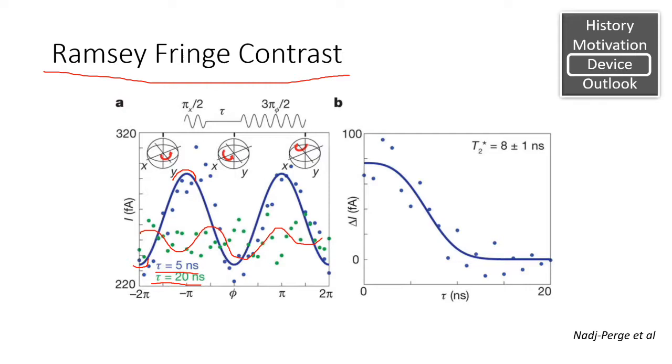So we take the contrasts and fit them to a sigmoid curve, and from this we were able to obtain a decoherence time of about 8 nanoseconds. Now 8 nanoseconds is not a good decoherence time, because this is on the same order of magnitude of most gate operations. This means the qubits may decohere before they even have a chance to be used.